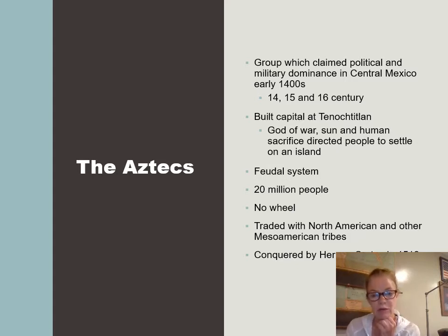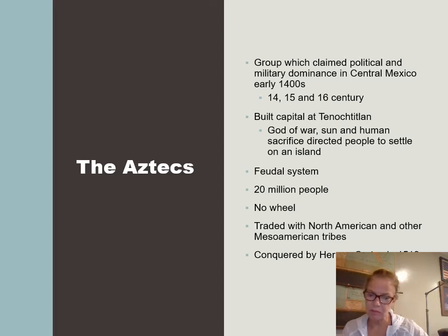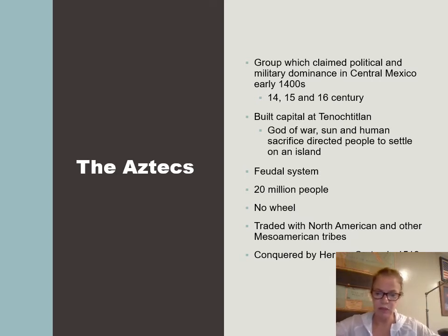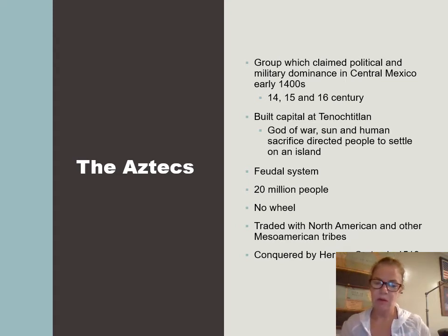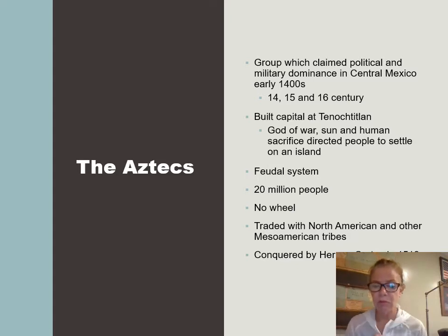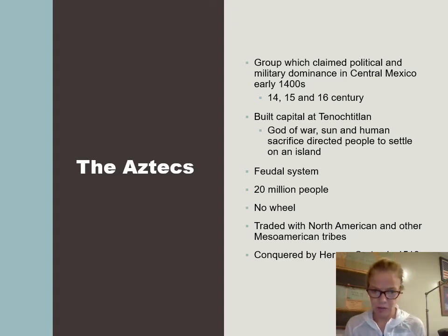The Aztecs were very powerful and very militant. They had conquered all the surrounding people and made them part of their feudal state. Montezuma was the king, and he had people loyal to him controlling other areas. Those people had to pay tribute — they were tributary states that pledged their fealty in exchange for protection. Human sacrifices were often those people captured in war. They built their capital at Tenochtitlan, which is the present-day site of Mexico City.